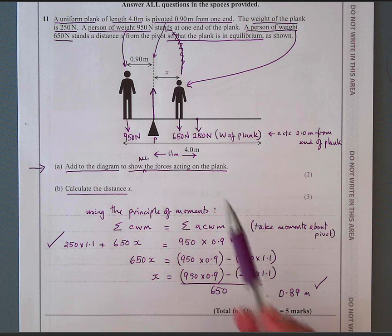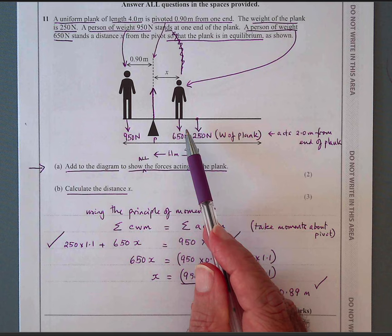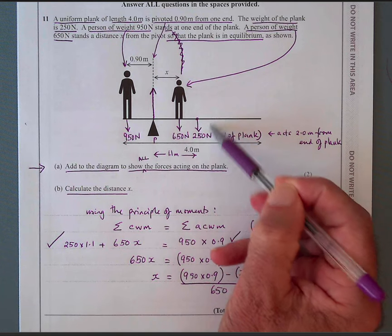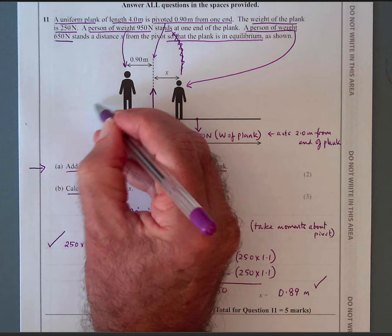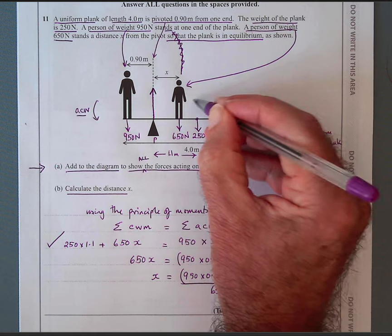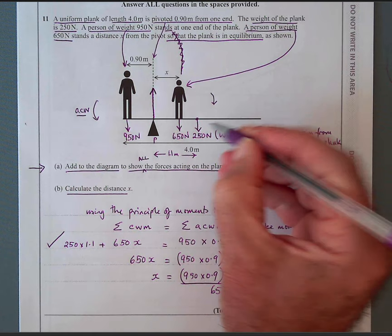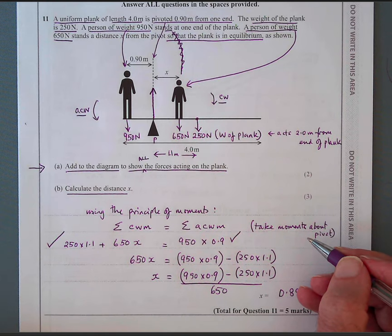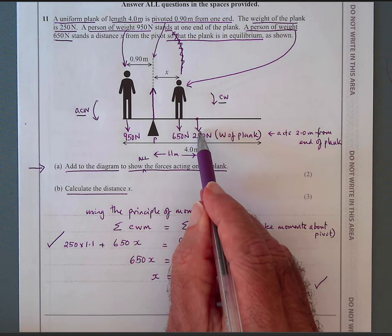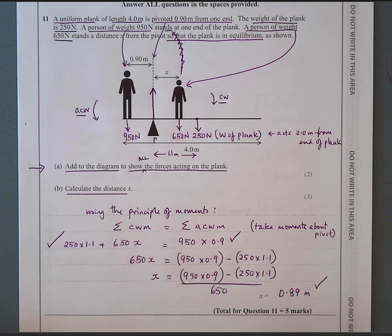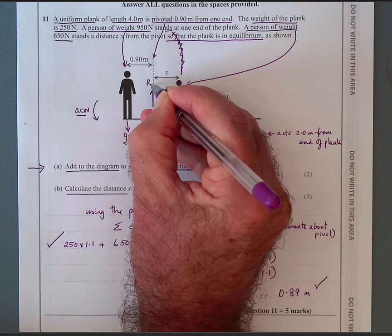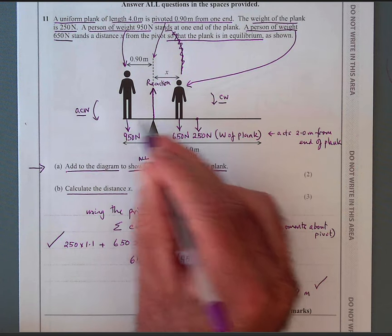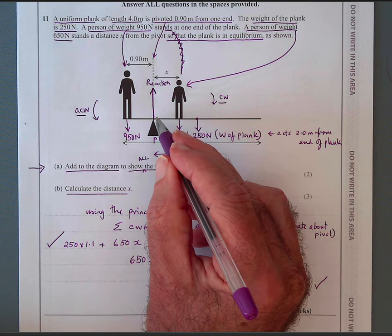You have to remember there are two conditions for equilibrium. One is that the moments — the turning effects of the clockwise weights — must balance the anti-clockwise weights. The forces downwards must also add up to the forces upwards. I've drawn an arrow at the pivot showing the reaction force upwards.